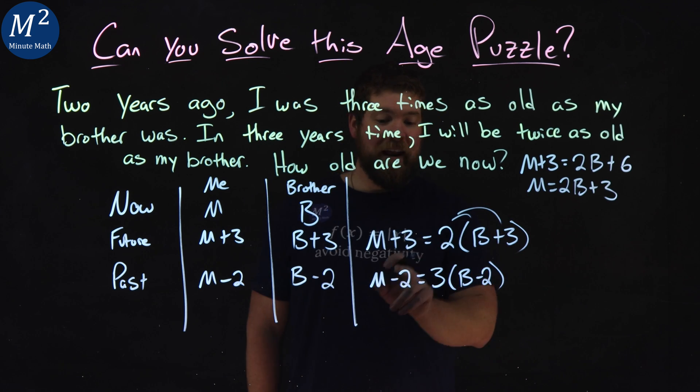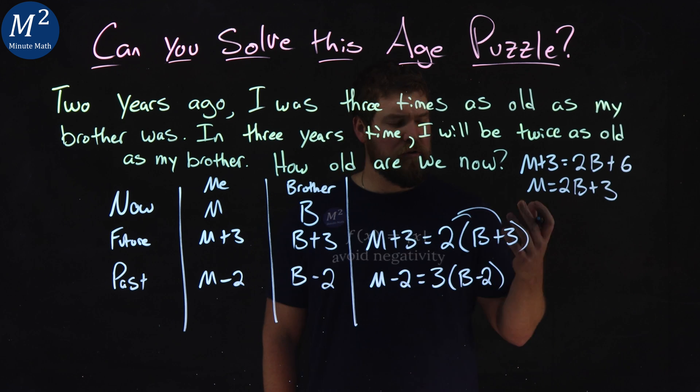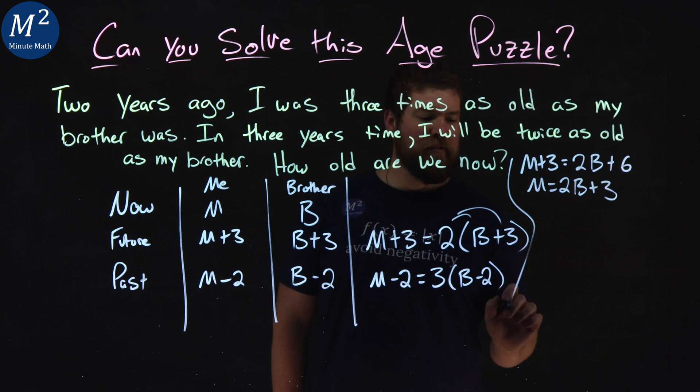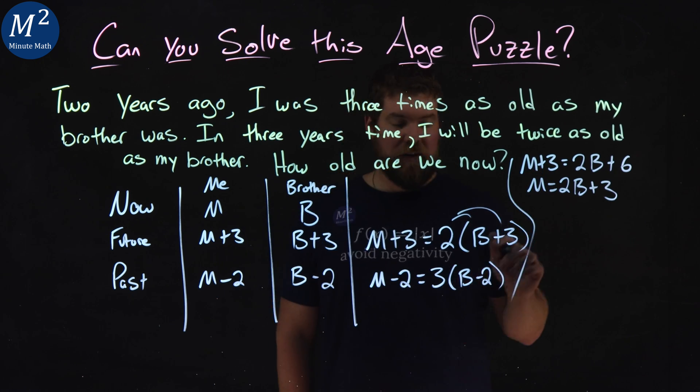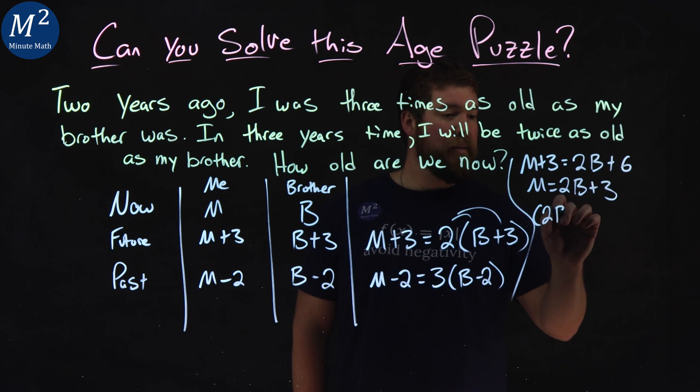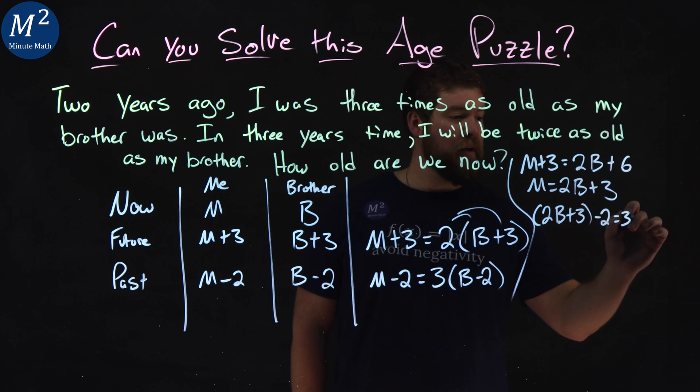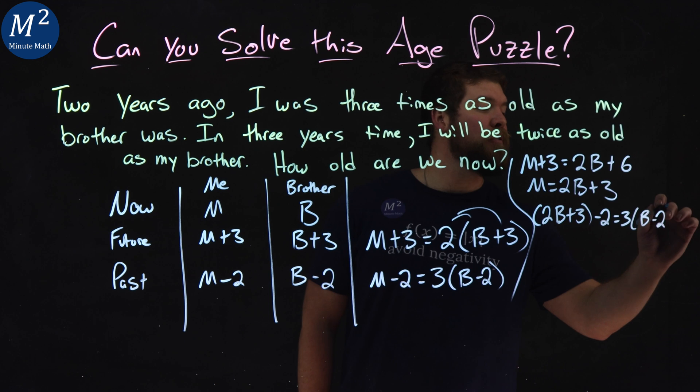Now with that, I can plug that information in for the M in the second equation. Substitution, let's do it that way. There's many ways to do it, but I'm doing substitution. It's my go-to, my bread and butter. So I have two B plus three, and for that M minus two is equal to three times B minus two.